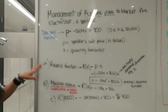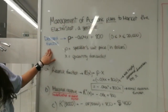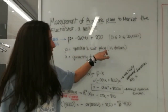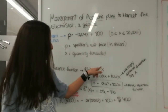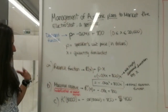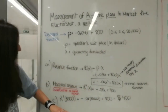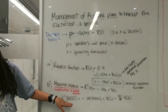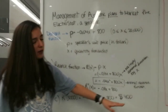Here we have an example of marginal revenue. The management of AccraSign plans to sell a new speaker. The demand function is price equals this, where P represents the speaker unit price in dollars and x is the quantity demanded. The revenue function is price times x. We want to know how much revenue they make by selling 5,000 units — we plug 5,000 into the revenue function and we get 400.